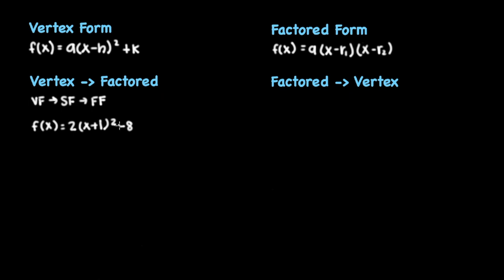Remember from a previous video that in order to convert from vertex form to standard form, you must square the binomial, distribute, and then combine like terms. If we do that here, we get 2(x² + 2x + 1) - 8, which will give us 2x² + 4x, and then 1 times 2 is 2 minus 8 is negative 6.